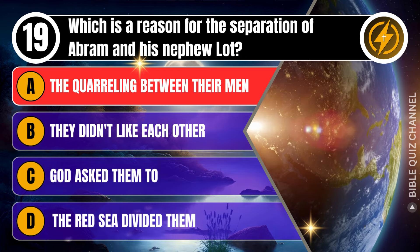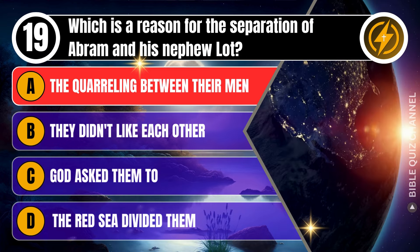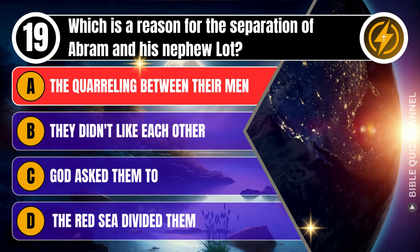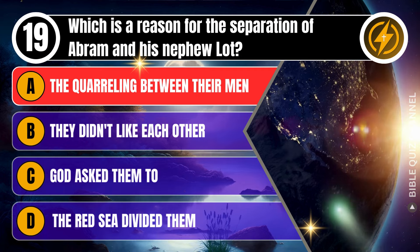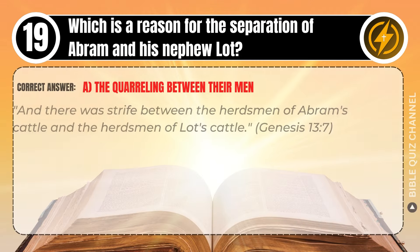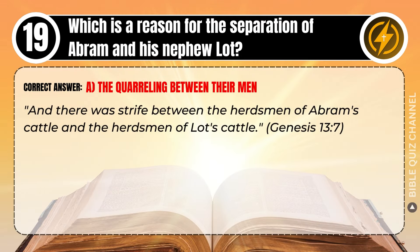Correct answer: A. The quarreling between their men. Explaining the Bible — And there was strife between the herdsmen of Abram's cattle and the herdsmen of Lot's cattle. Genesis, chapter 13, verse 7.